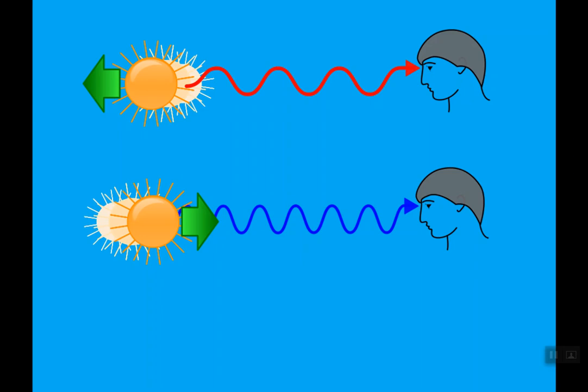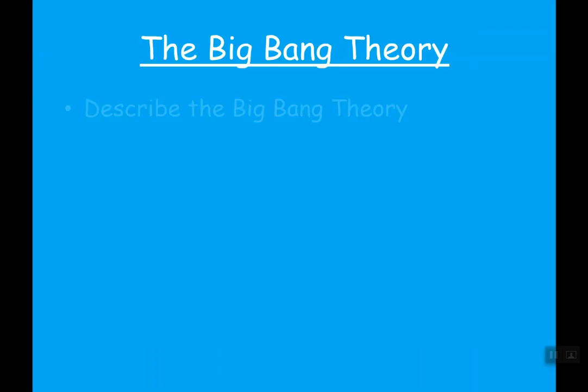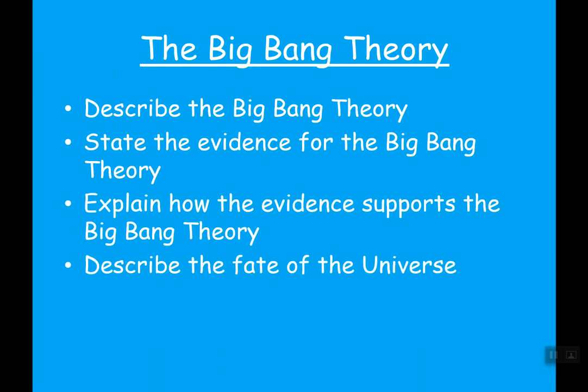So those are your two bits of evidence for the Big Bang: cosmic microwave background radiation or CMBR, and redshift. Now the final part is looking at the fate of the universe. The fate of the universe is quite tricky because in order to work it out we need to know how much mass is in the universe, and we're unsure at the minute.